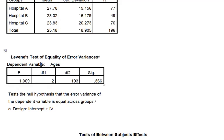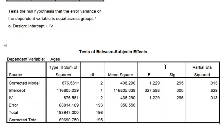And here's the Levene's test. This is important. It will tell us if our data has violated the assumption of homogeneity of variance, and it has not. That number is much greater than 0.05, so we are good to go. And here is your actual ANOVA box — your ANOVA table.